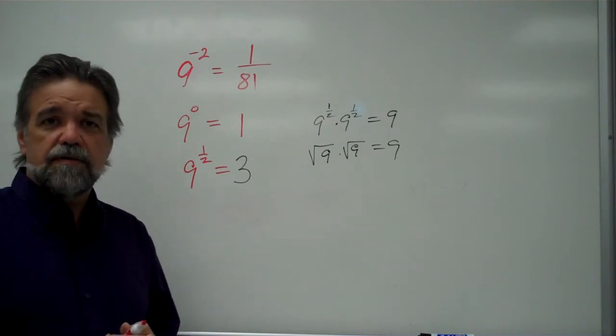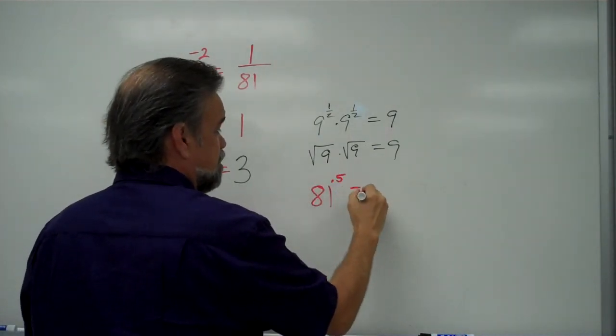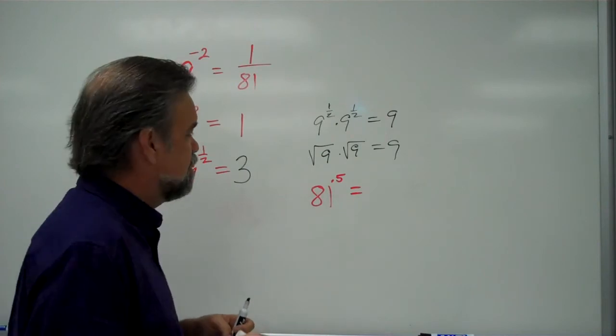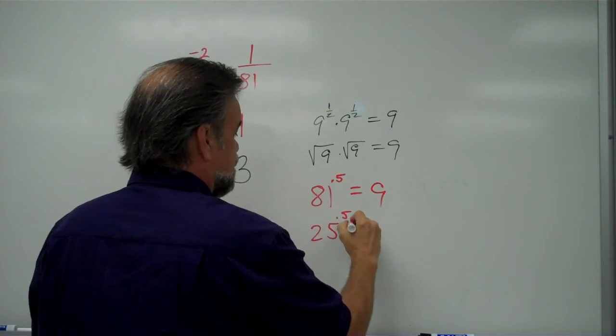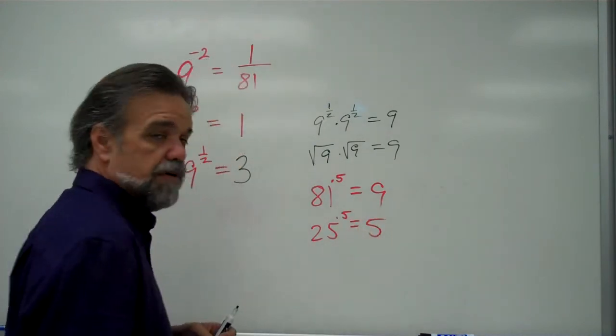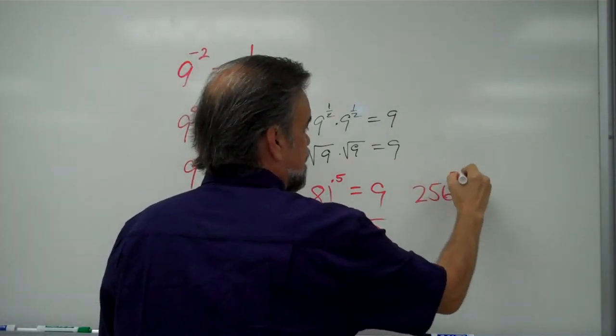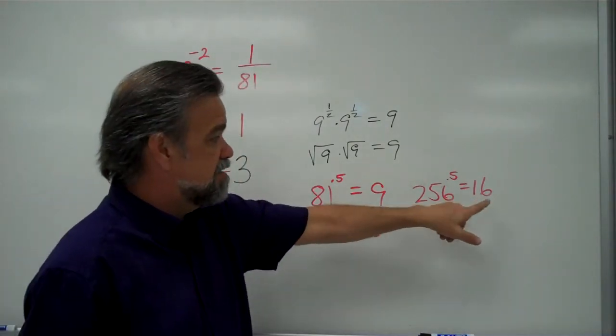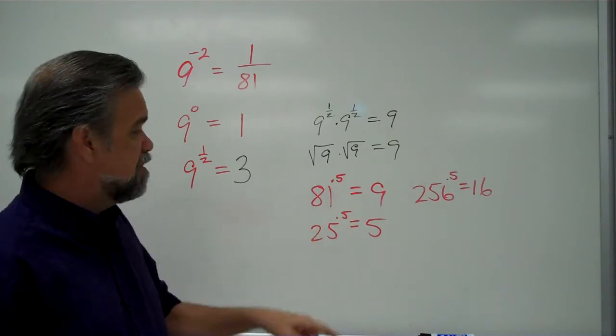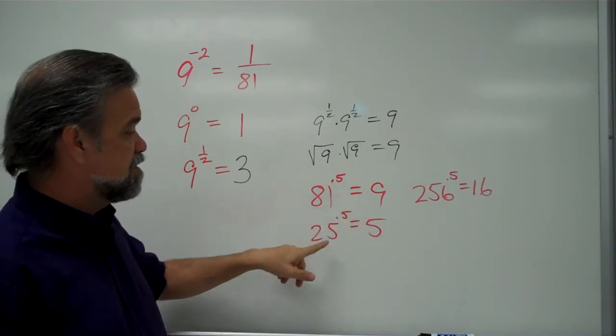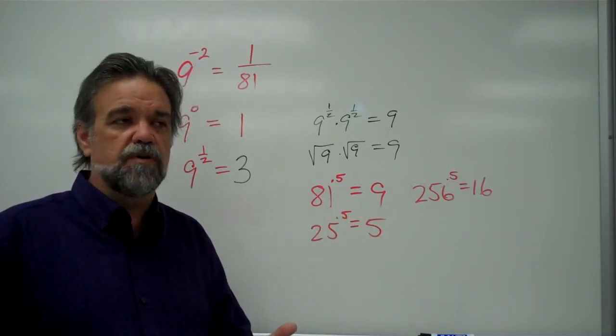Matter of fact, if you take a calculator and try 81 to the 0.5 power, 0.5 is a little easier to put in a calculator than 1 half, you'll see that it equals 9. Take 25 to the 0.5 power, you'll see it equals 5. Take 256 to the 0.5 power, and you'll see it equals 16. Why? Because 16 squared is 256, because 9 squared is 81, and because 5 squared is 25. Each of those, the square root of 81 is 9, the square root of 25 is 5, and the square root of 256 is 16. So to the 1 half power simply means square root.